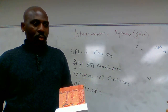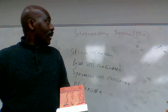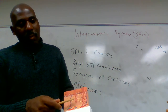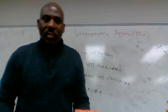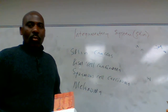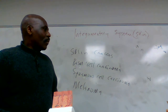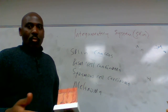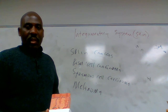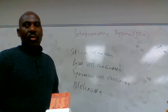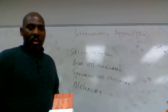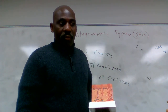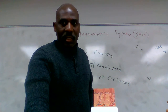These are the three most common homeostatic imbalances of the skin. Melanoma is the most dangerous type of skin cancer — it can be resistant to treatment. Similarly, third degree burns, because they affect all layers of the skin, are the most dangerous type of burn. That concludes our demonstrative lab of the integumentary system.